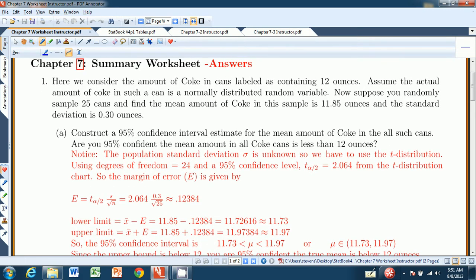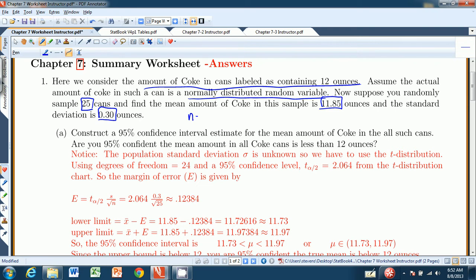We're considering the amount of Coke in cans labeled as containing 12 ounces. We'll assume the actual amount of Coke in such a can is a normally distributed variable. Suppose you randomly select 25 cans and find the mean from that sample is 11.85 and the standard deviation is 0.3. So I have n equals 25, that's my sample size. The sample mean is 11.85 and the standard deviation is 0.3.